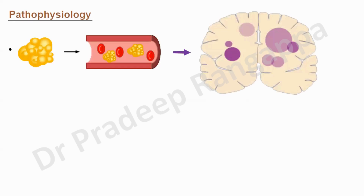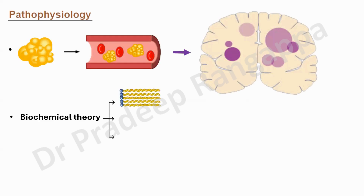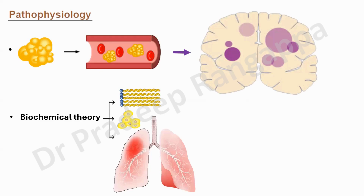When fat enters the systemic circulation, it leads to micro-embolization within the brain causing microinfarcts. There is a biochemical theory involving free fatty acid circulation and platelet aggregation, along with a biochemical pneumonitis mediated by interleukin-1-beta. An inflammatory cascade is activated, releasing leukotrienes and cytokines that cause lung injury and organ dysfunction along with free fatty acid toxicity — this is the combined biochemical and cellular theory.